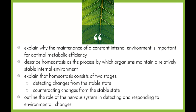We're going to start off by looking at four dot points: explain why the maintenance of a constant internal environment is important for optimal metabolic efficiency; describe homeostasis as the process by which organisms maintain a relatively stable internal environment; explain that homeostasis consists of two stages — detecting changes from the stable state and counteracting changes from the stable state; and outline the role of the nervous system in detecting and responding to environmental changes.